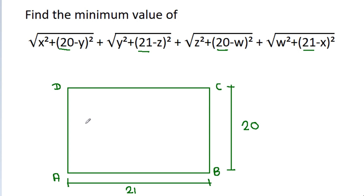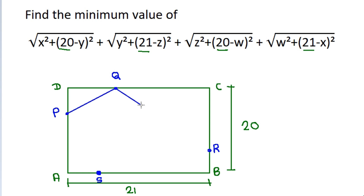And if we take a random point P on AD, any random point Q on CD, any random point R on BC, and any random point S on AB. And if we join PQ, QR, RS, and SP.